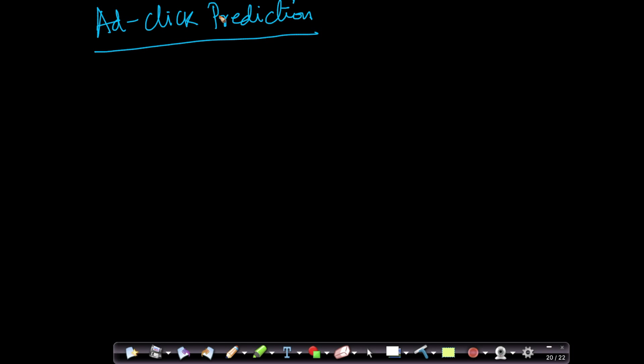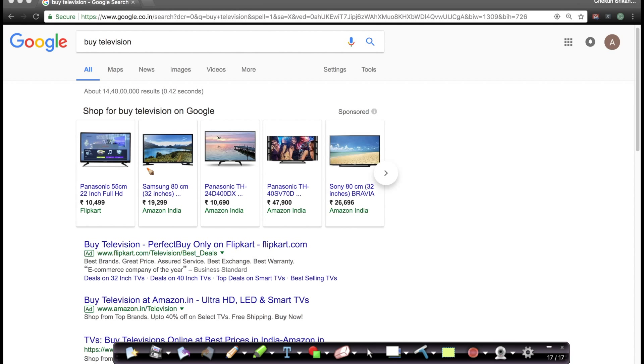One of our very interesting projects is called AdClick prediction. This problem is very close to my heart because I've worked on internet advertising problems at Yahoo Labs and Amazon for a very long time. This is my area of specific domain expertise that I've built a lot of machine learning and AI systems in. So let me give you an example of what it is and why it is important.